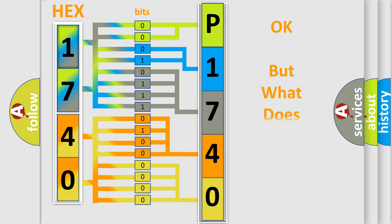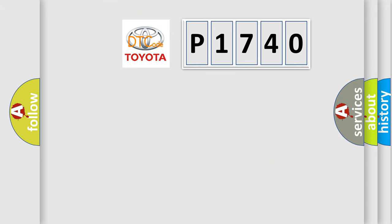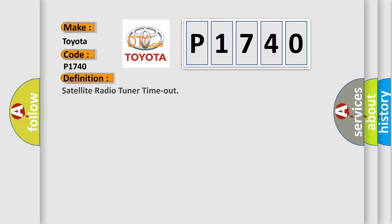The number itself does not make sense to us if we cannot assign information about what it actually expresses. So, what does the diagnostic trouble code P1740 interpret specifically for Toyota car manufacturers? The basic definition is: Satellite radio tuner timeout.